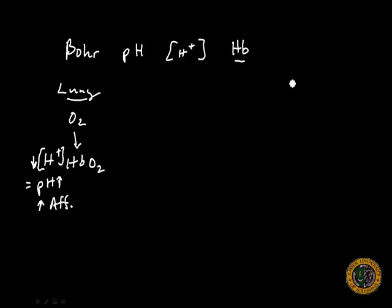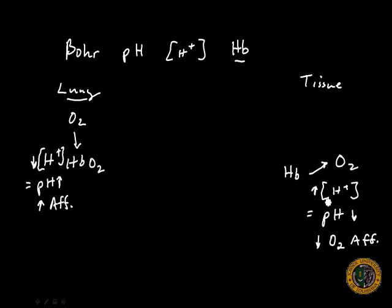In the tissue there is an opposite effect occurring where oxygen needs to be released. This will typically occur at a fairly high hydrogen ion concentration, which equals a low pH. This decreases the affinity of O2, and that's what you want to see: a decrease in affinity of O2 for hemoglobin in the tissues.